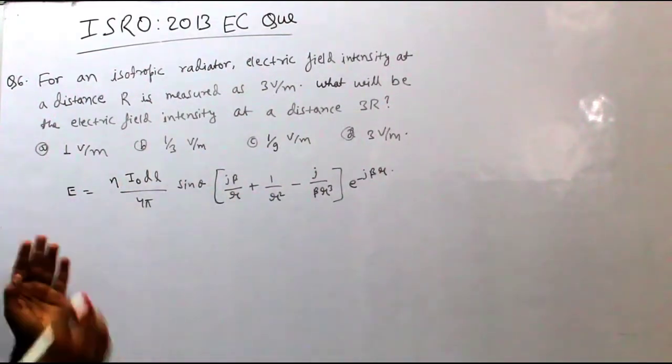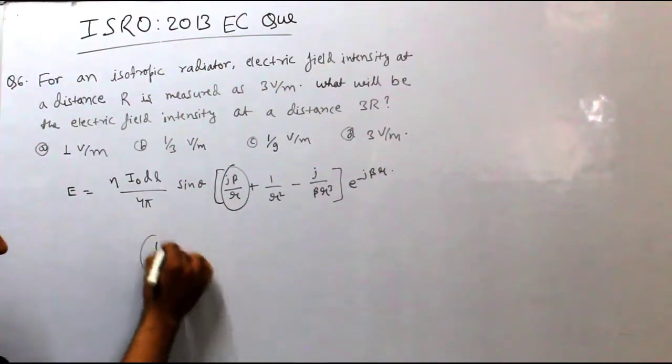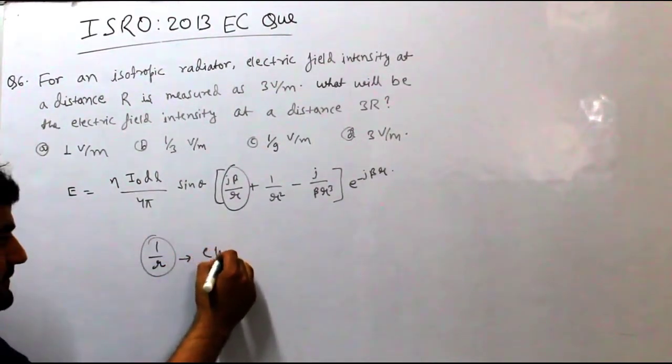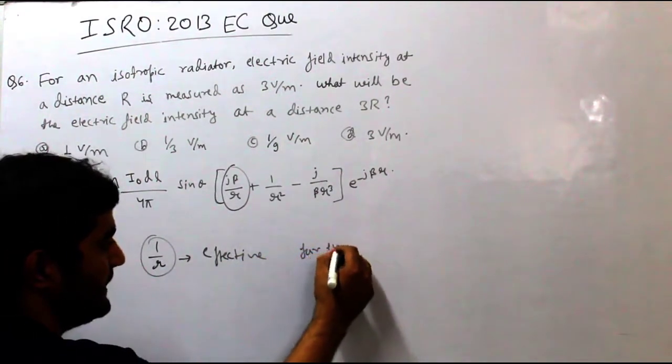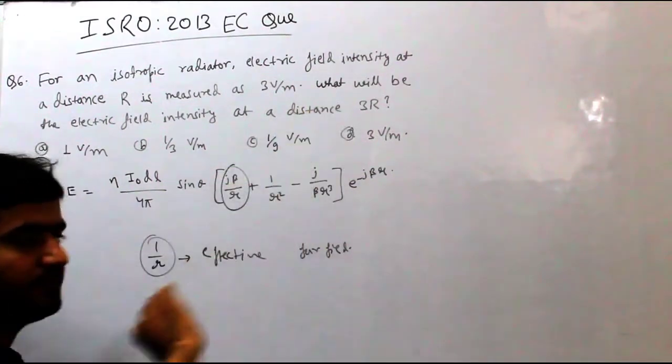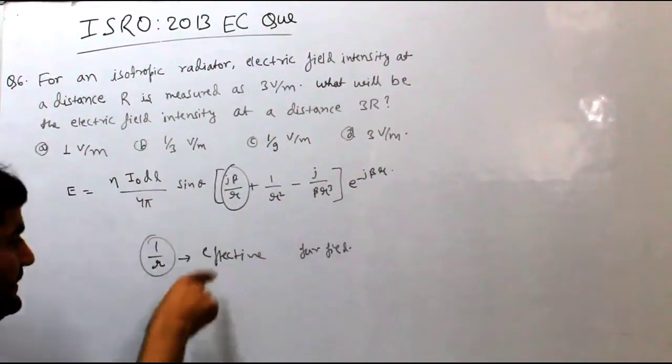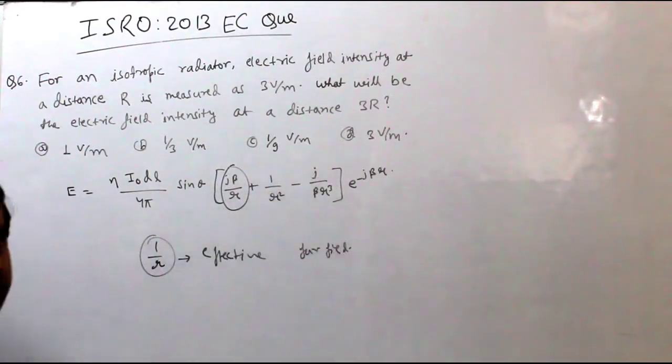So, we have to concentrate on this. And in this, only 1 by R, which is the part that will be effective for the far field. If we talk about the far field, which means wherever the antenna is placed, we talk about some particular dual distance. So for that case, 1 by R will be dominating and rest will be neglected.